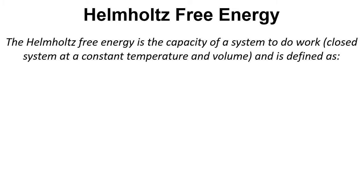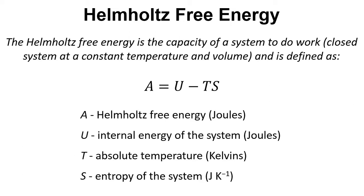Helmholtz free energy is really central to what SAFT calculates and determines, so we need to know what this is. It's the capacity of a system to do work, and we're talking about a closed system at constant temperature and volume. The equation for this is A equals U minus TS, where U is the internal energy of the system, T is the temperature, and S is the entropy.